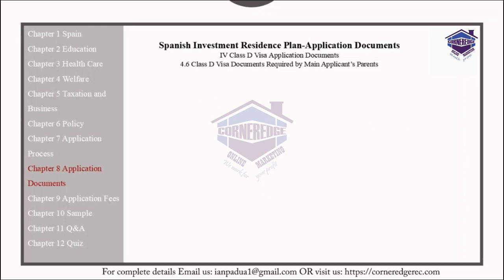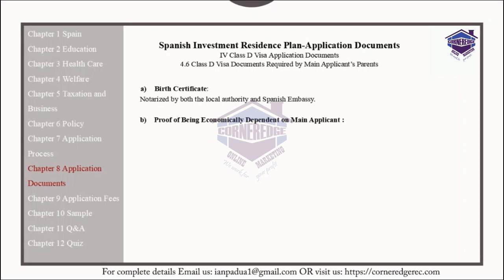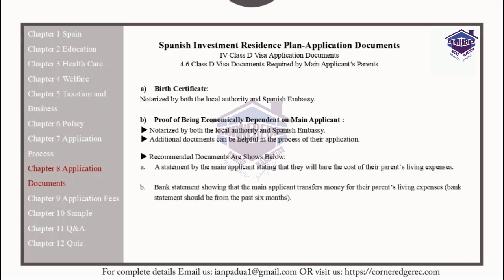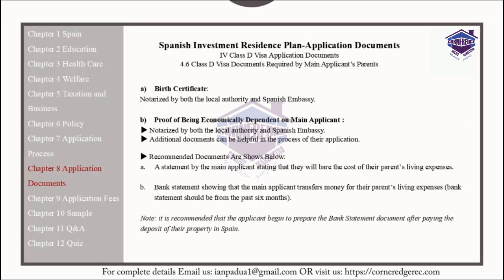If the main applicant's parents are accompanying them, they should include a birth certificate notarized by both the local authorities and the Spanish embassy, and proof of being economically dependent on the main applicant, also notarized by both the local authorities and the Spanish embassy. Additional recommended documents include a statement by the main applicant stating that they will bear the cost of their parents' living expenses, or a bank statement showing that the main applicant transfers money for their parents' living expenses. Bank statements like this should be from the past six months, and it is recommended to begin preparing them after paying the deposit on the property in Spain.